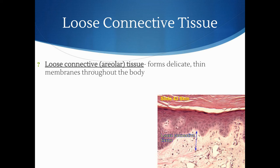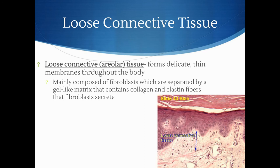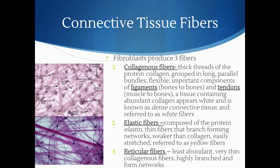Loose connective — or areolar — tissue forms delicate, thin membranes throughout the body. It's mainly composed of fibroblasts separated by a gel-like matrix containing collagen and elastin fibers that the fibroblasts secrete. This loose connective tissue binds skin to underlying organs and fills spaces between muscles. It's more prone to damage than tendons and ligaments, which need to resist a lot of tension and force.